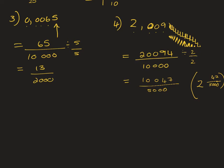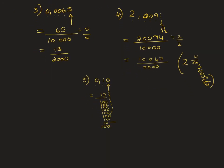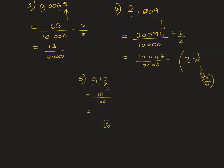The last one is number five: 0,10. The zero here is a placeholder — it's just sitting there; you can use it or not. Following the same rules: units, tenths, hundredths. The last digit is in the hundredths, so we have 10 over 100. We can divide top and bottom by ten, which gives us 1 over 10.